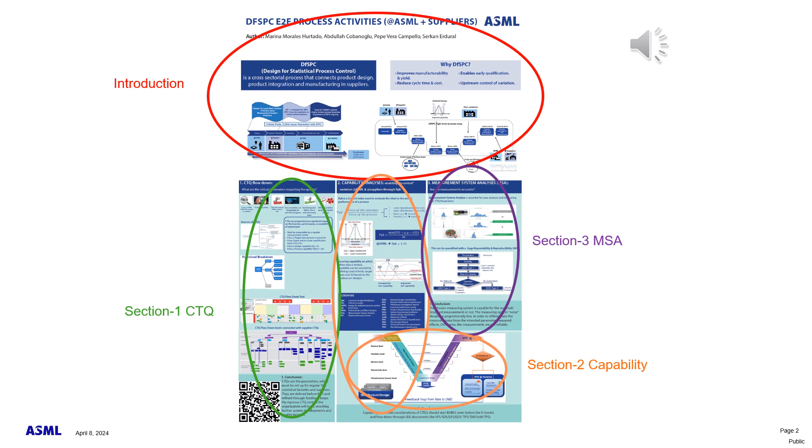Section 1 is describing the critical to quality flow down process with examples. Section 2 is describing the capability analysis through the process steps. Section 3 is briefly describing the measurement system analysis.